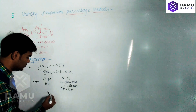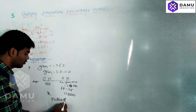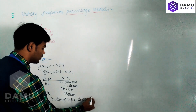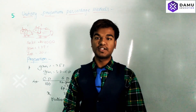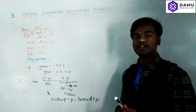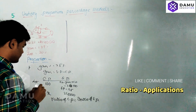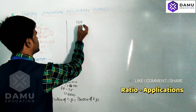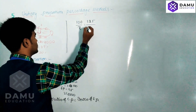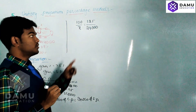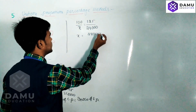We don't know the actual cost price, but the selling price is 24,000. Using the proportion method: ratio of cost price equals ratio of selling price. So 100 divided by X equals 125 divided by 24,000. Shifting terms, X equals 24,000 multiplied by 100 divided by 125.